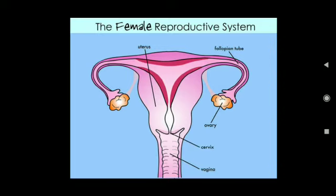The uterus opens into the vagina through the cervix. During sexual intercourse, sperms enter through the vaginal passage. They travel upward and reach the oviduct where they encounter the egg.